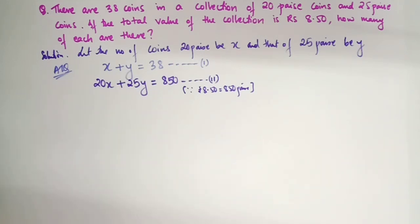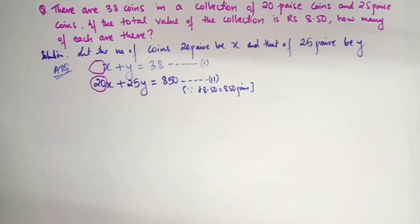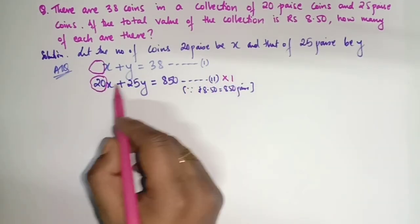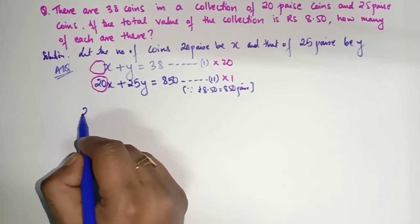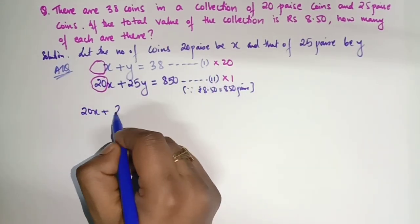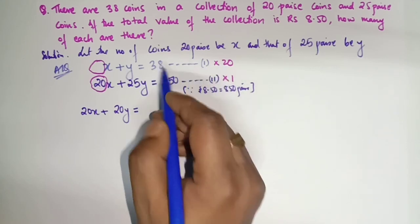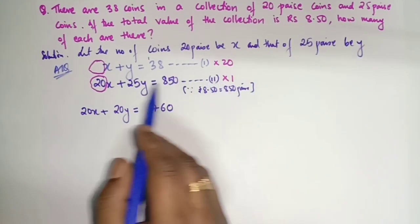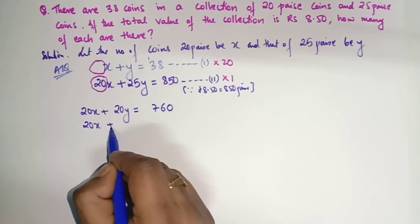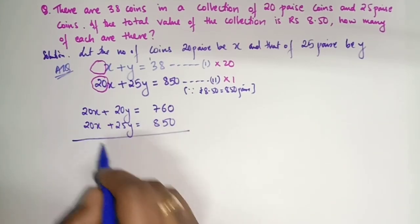Now we will eliminate x. The coefficient of x in Equation 1 is 1 and in Equation 2 is 20. So multiply Equation 1 by 20: 20x + 20y = 760. Equation 2 stays: 20x + 25y = 850. Since both x coefficients are 20 and both signs are plus, we cannot cancel directly, so we change the sign of one equation.